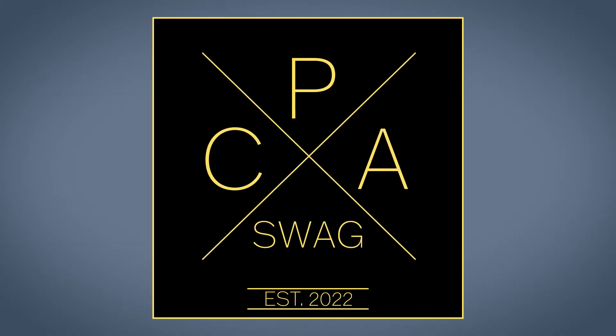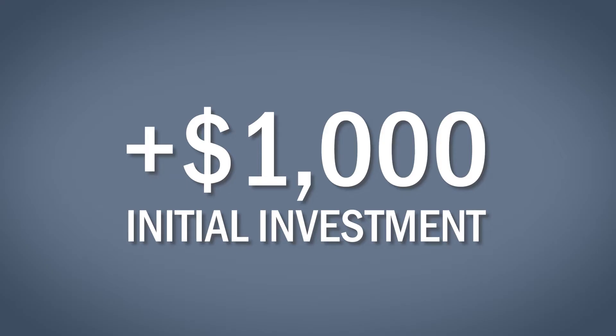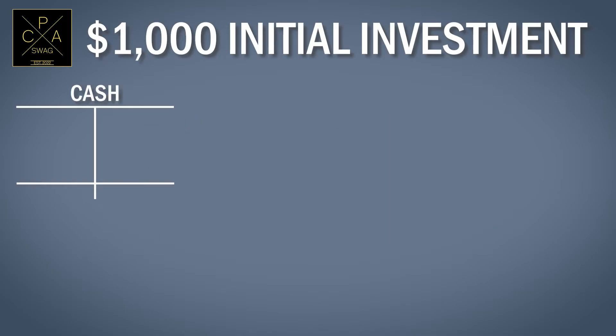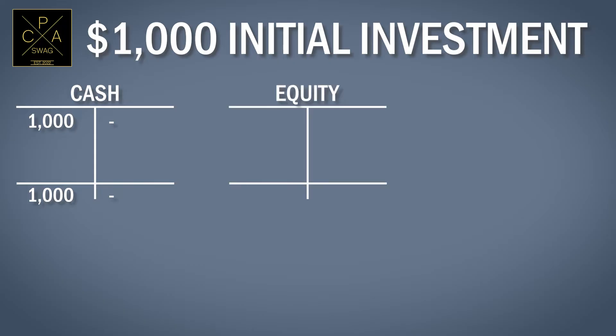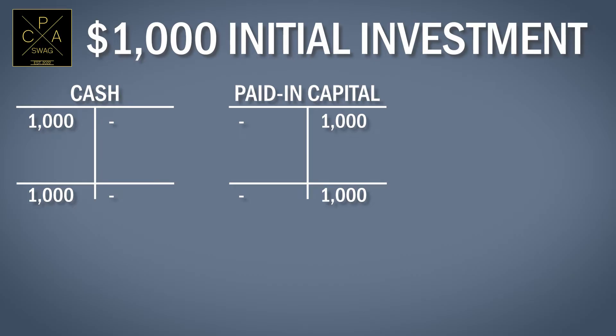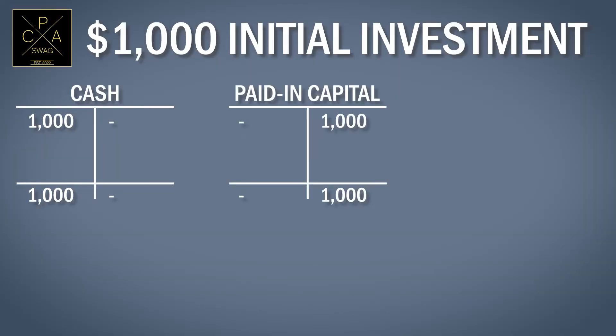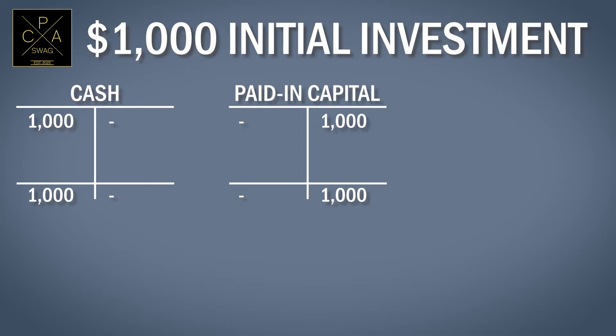To fund the initial operations of CPA Swag, we deposit $1,000 in the company's bank account. This transaction is reflected in T-accounts as follows: cash would increase by $1,000 — cash is an asset account and has a normal debit balance, so to increase cash we debit cash by $1,000. Equity would also increase by $1,000 because this is the ownership in the company after deducting all liabilities. Paid-in capital is an equity account with a normal credit balance, so to increase paid-in capital we credit this account. We now have a visual representation showing $1,000 of cash and $1,000 of paid-in capital.